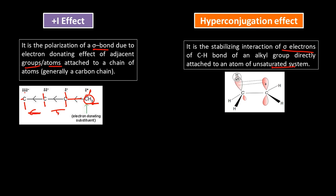Hyperconjugation effect is the stabilizing interaction of sigma electrons of a C–H bond of an alkyl group that is directly attached to an atom of an unsaturated system, or it may also be attached to a vacant p orbital. Here we have a carbocation — positive charge present over a carbon with a vacant p orbital. The CH3 group is present adjacent to it, so these three hydrogens are alpha hydrogens.